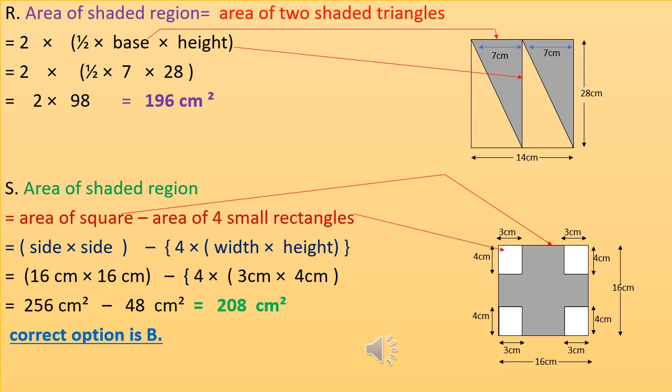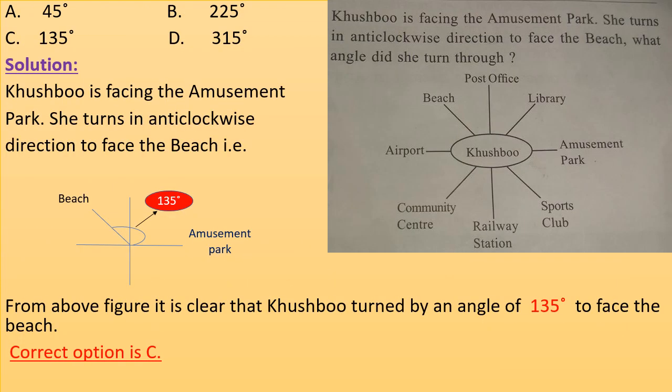The correct option for the matching question is B. The next question: Khusbu is facing the amusement park. She turns in the anti-clockwise direction to face the beach. What angle did she turn through? From the figure, it is clear that Khusbu turned by an angle of 135 degrees to face the beach. Correct option is C.